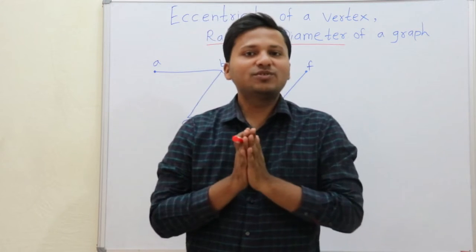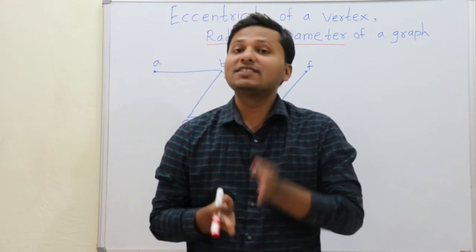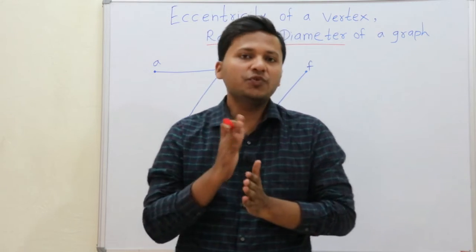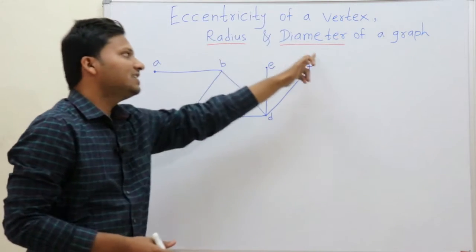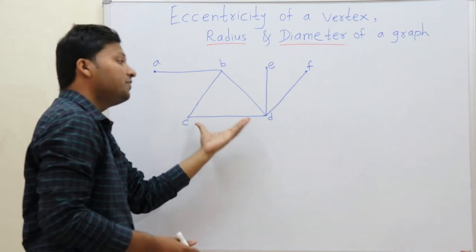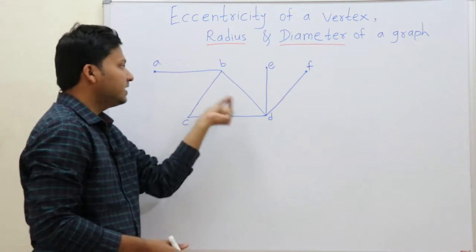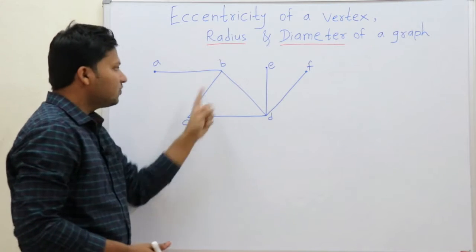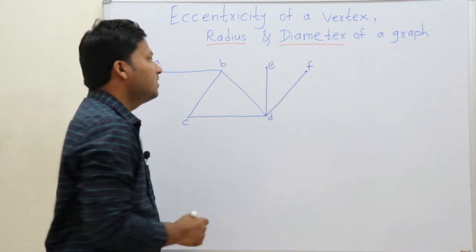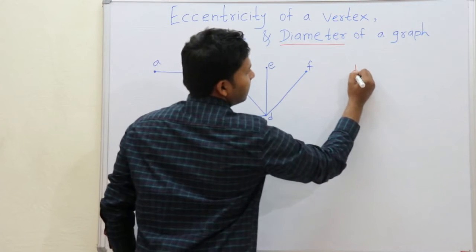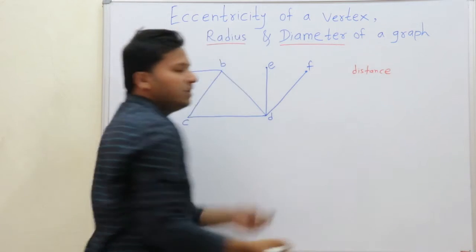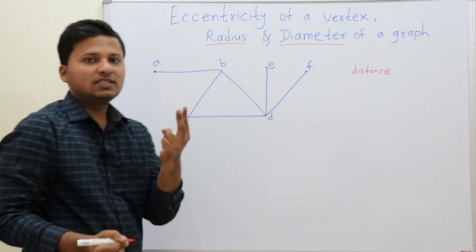Today we are going to see what is the eccentricity of a vertex in a graph, along with the radius and diameter of a graph. This is the graph and we want to find out the eccentricity of each vertex. Before finding that, we will see what is the distance between two vertices in a graph.